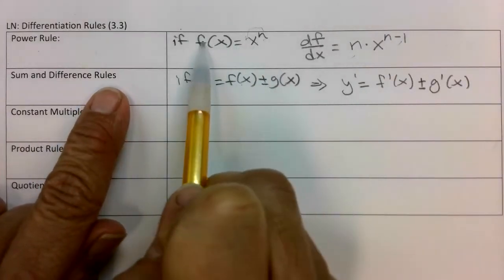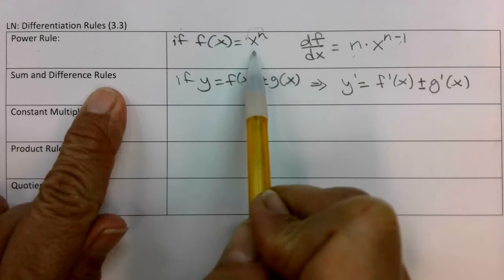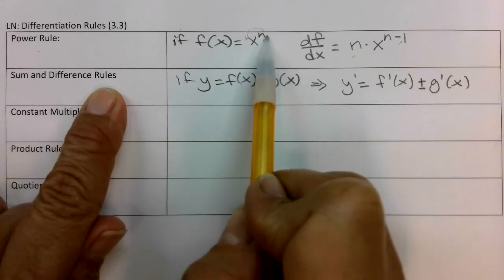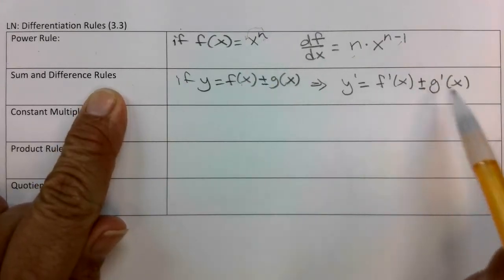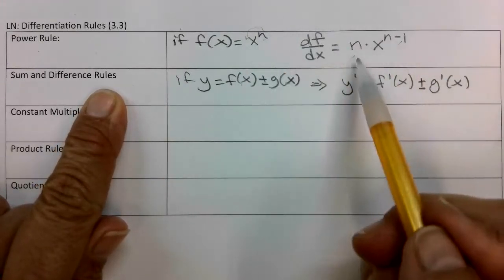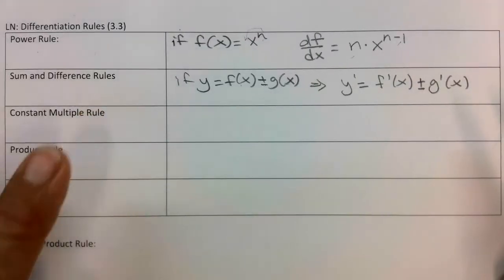Think about that. If you had just a polynomial — multiple terms with x's raised to powers — we could find those derivatives by bringing the power down in front and then taking one away.